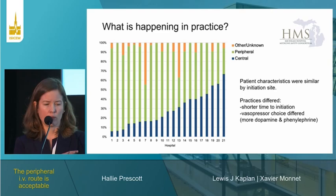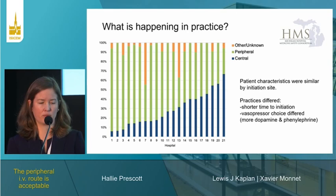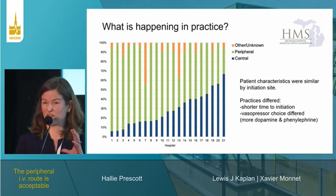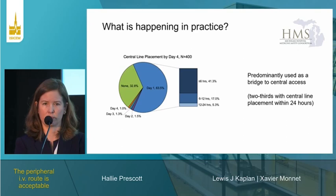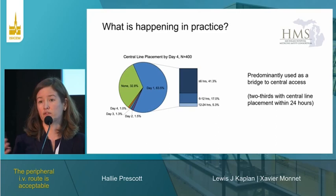There was no difference in patient characteristics between those initiated peripherally versus centrally, but patients initiated peripherally had shorter time to initiation and were more likely to receive dopamine or phenylephrine, reflecting policies that restrict certain vasopressors peripherally. About two-thirds of patients quickly had a central line placed — 40% within six hours, two-thirds within the next day — and about a third never went on to have a central line, suggesting peripheral vasopressors can help some patients avoid central line placement altogether.